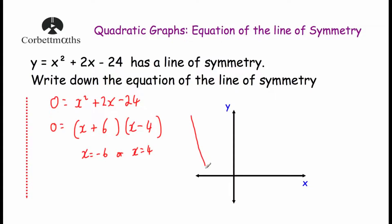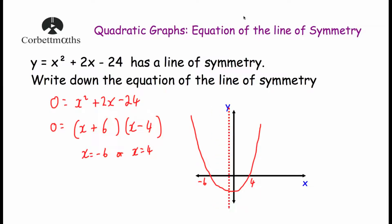So our graph crosses at minus 6 and 4 - it looks something like this (please excuse my bad sketch). The line of symmetry passes through the middle of the parabola. To find the middle of minus 6 and 4, we add them together and halve it: minus 6 plus 4 equals minus 2, and minus 2 divided by 2 equals minus 1. So the mirror line passes through minus 1 on the x-axis, and the equation is x equals minus 1.